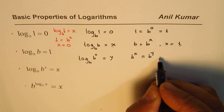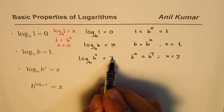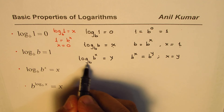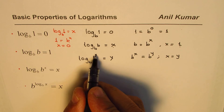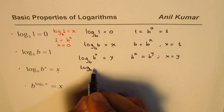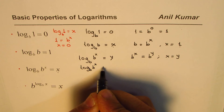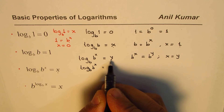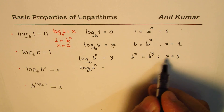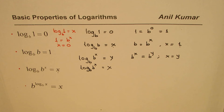This equation is true only if x equals y. So log to the base b of b to the power of x equals y, and since y equals x, this equals x — the exponent. That is how we can prove it. These are short proofs for the same.